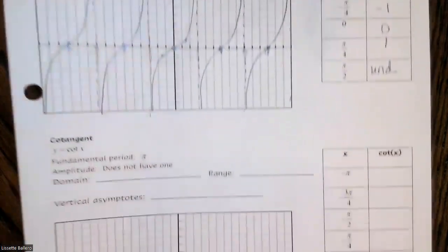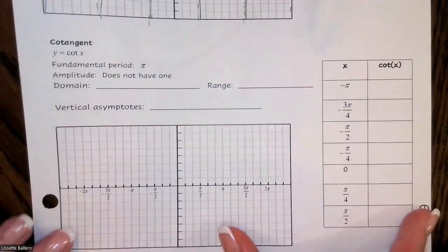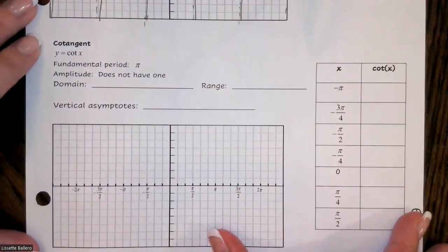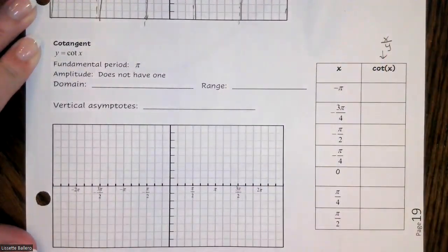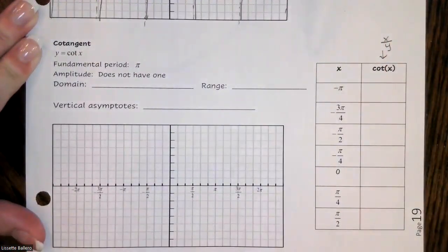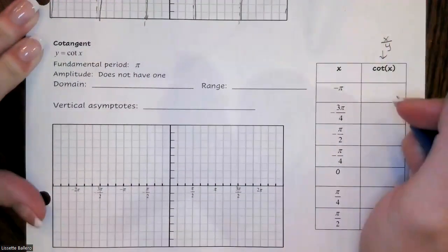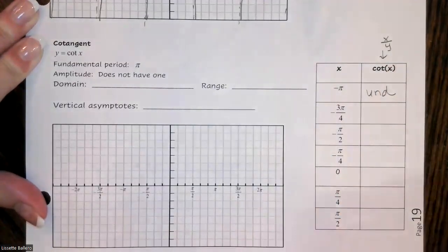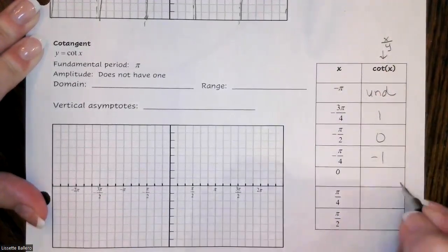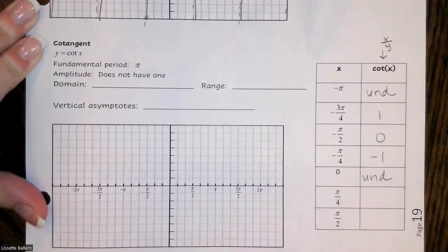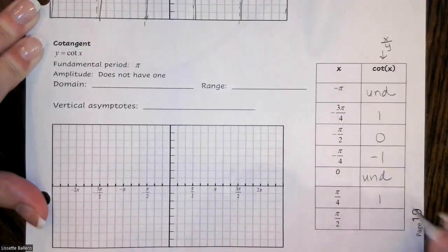Now let's look at our cotangent. We're going to do the table of values again. Cotangent is x over y — it's the reciprocal of tangent. Taking our values from the unit circle and putting x over y: at negative π, that's undefined since y is zero in the denominator. Then we get 1, 0, negative 1, undefined again since at zero the y value is zero, then 1 and 0.